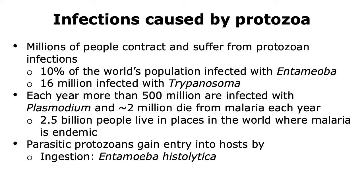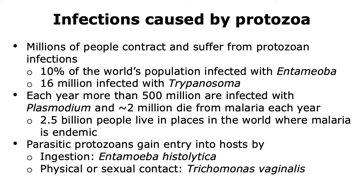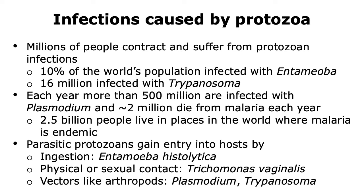Entamoeba histolytica is a protozoan that causes the disease amoebiasis. Protozoa can also enter through physical or sexual contact. An example of this is Trichomonas vaginalis, which causes the disease trichomoniasis. Protozoa can also gain entry into a host through vectors like arthropods, and this is usually done through insect bites. Plasmodium, which causes malaria, and Trypanosoma, which causes sleeping sickness, are both able to gain entry into the host through insect bites.